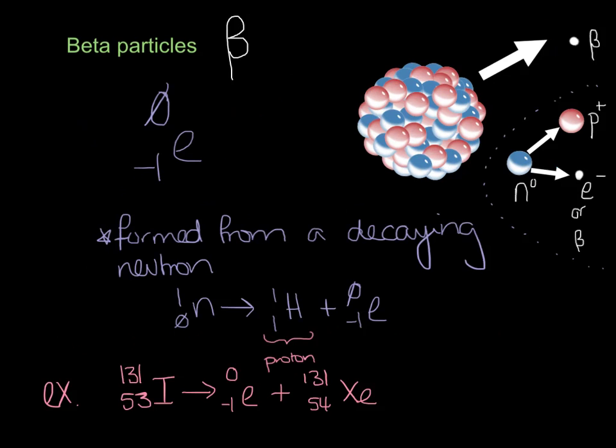Now, a beta particle, which is written like this, is a high-energy electron that's formed from decaying neutrons. So it's a neutron and it decays into a proton and an electron. And this electron that's formed is really the beta particle, and it's also accompanied by something else, but we're not going to talk about that.